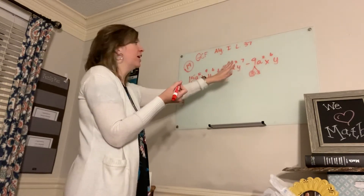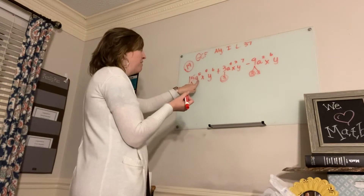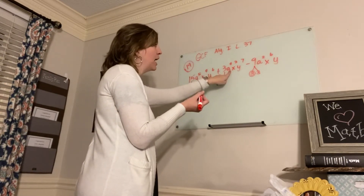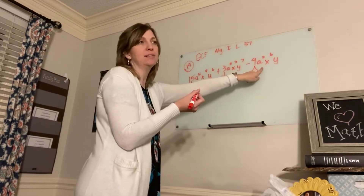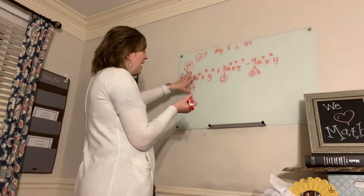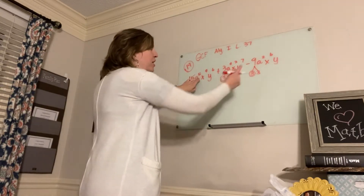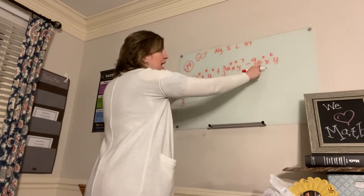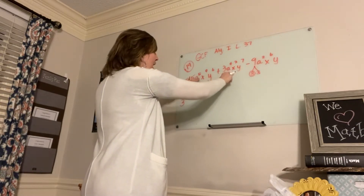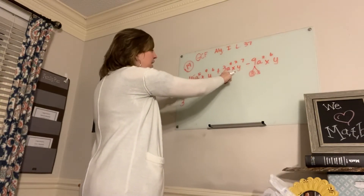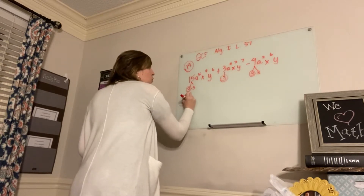Now, what we have to do is look at our variables. I've got five A's, I've got four A's, and I have two A's. What is the most A's I have in common? Even though this one has 5, this one only has 2, so it can only share two A's in common with all. So, A squared.